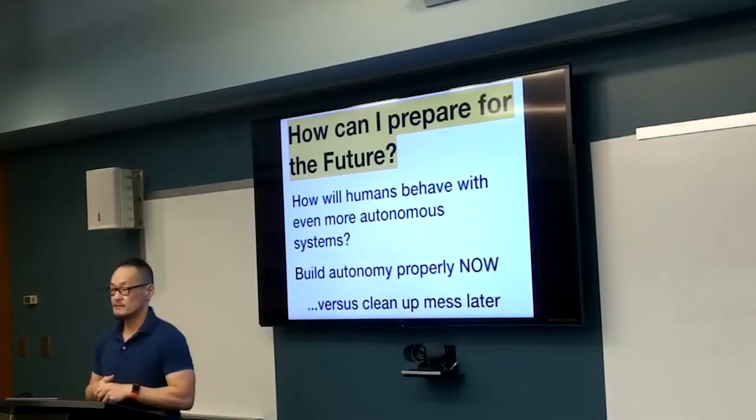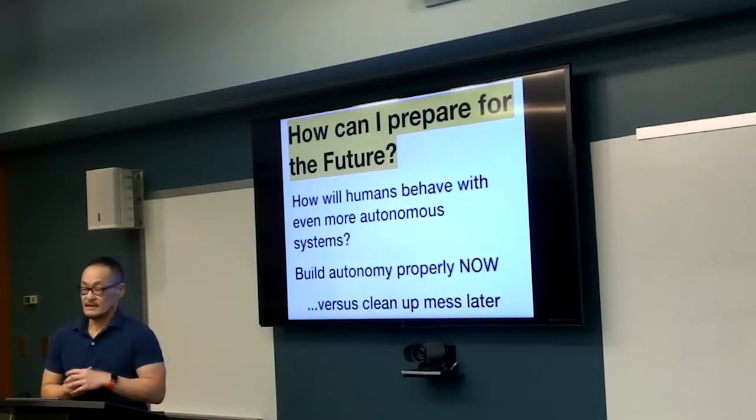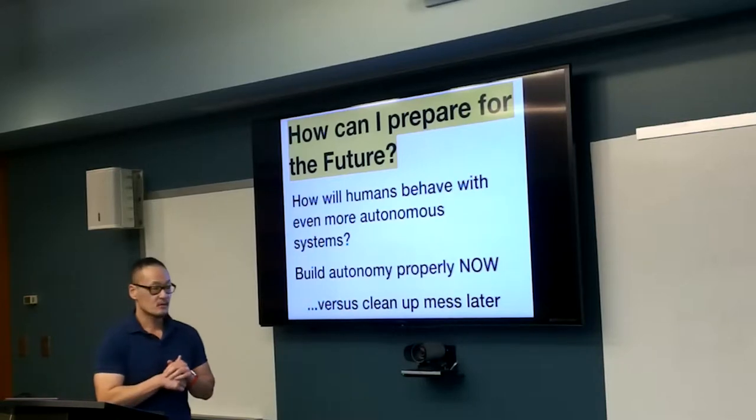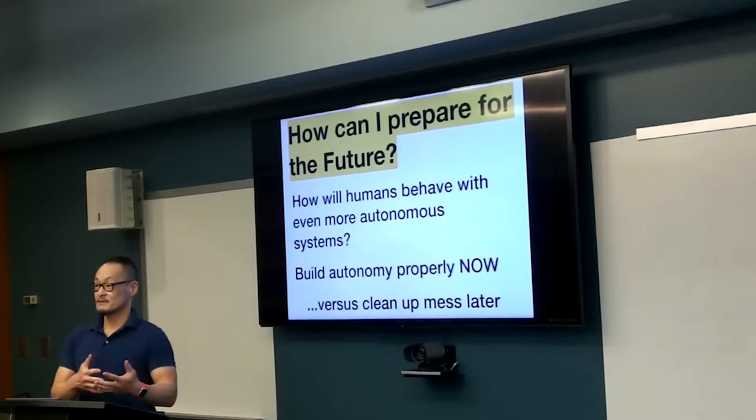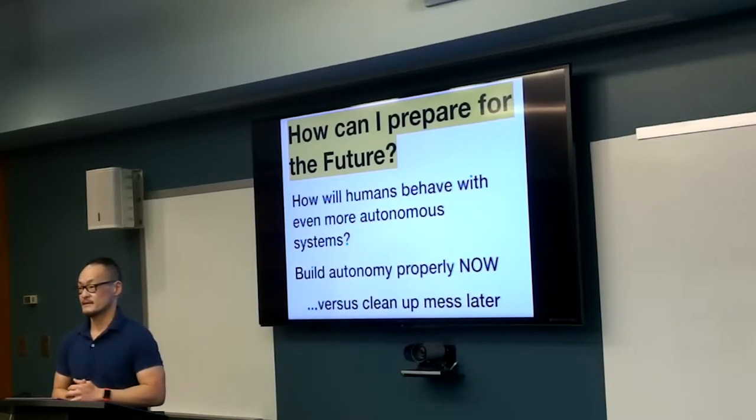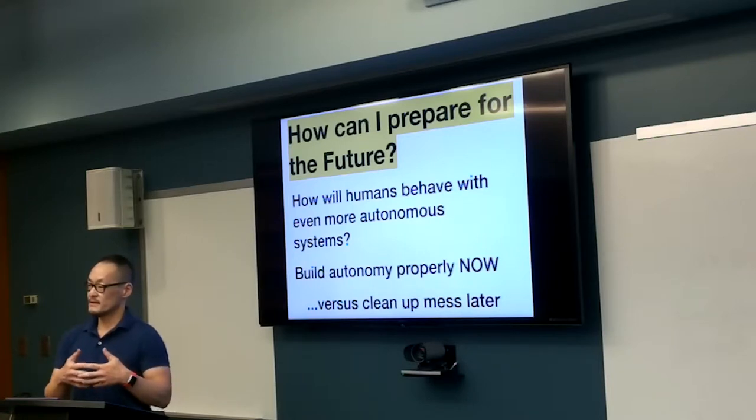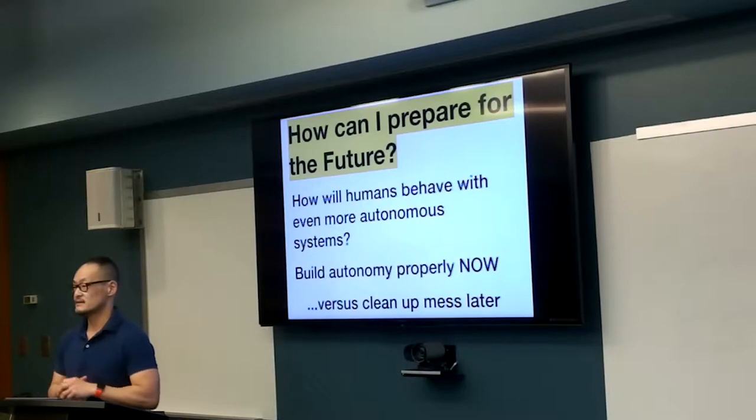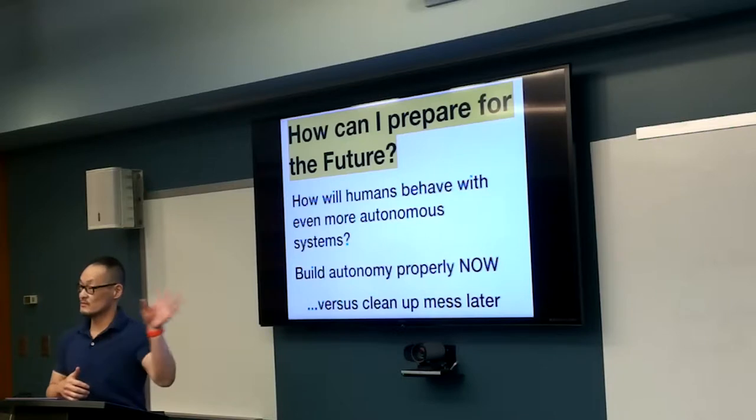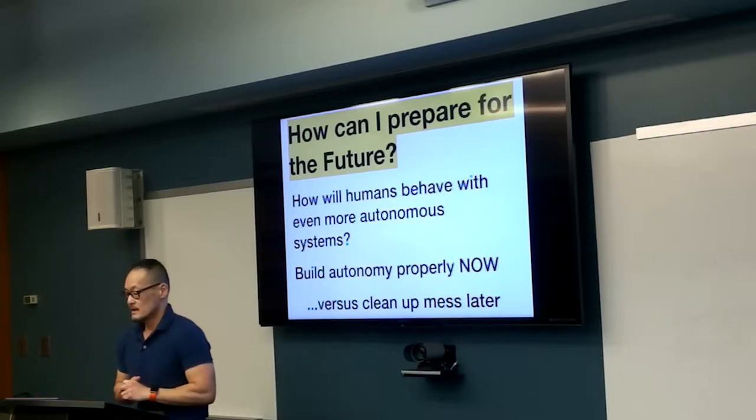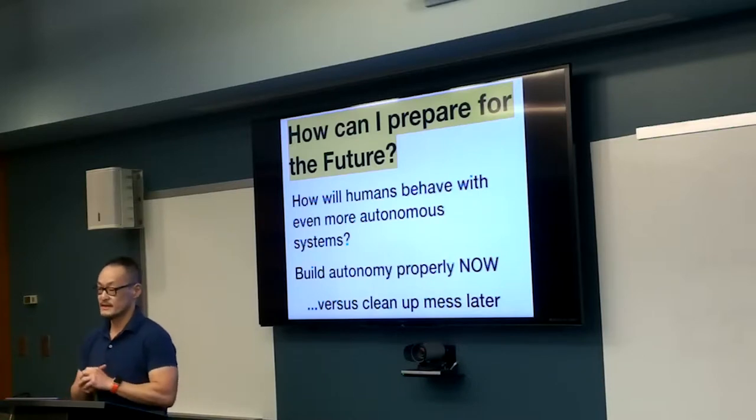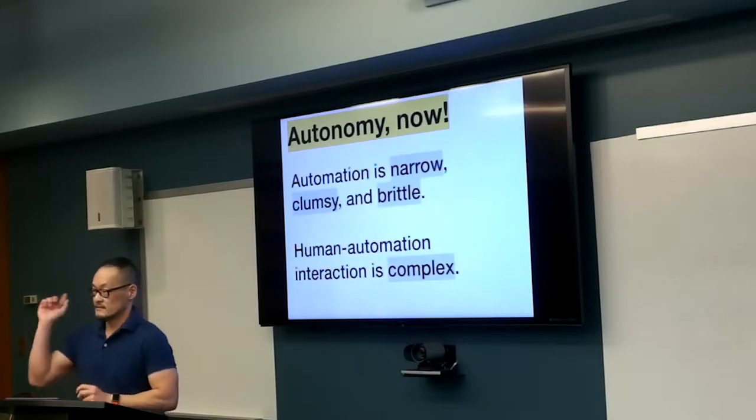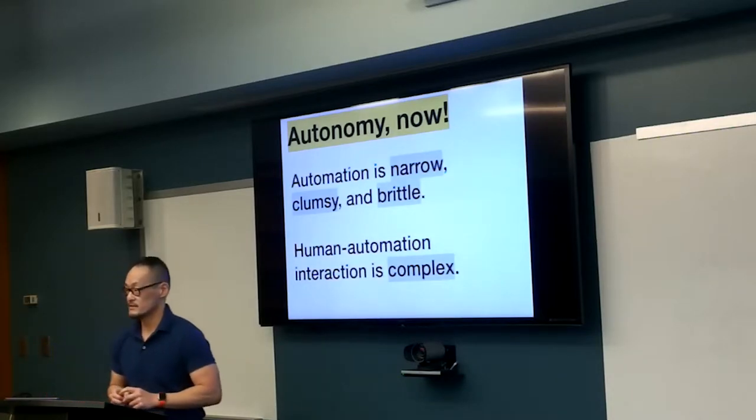So how can I, as a human-factors person, prepare for the future? And given that the future hasn't happened, how can I shape it? The question that we ask ourselves is how will humans behave with autonomous systems that are even more autonomous, potentially even smarter than the clumsy automation that we have right now? Once we do that, we can use this information to design autonomous systems for the future that won't result in San Francisco blowing up.